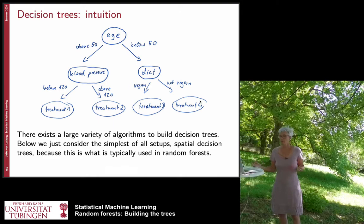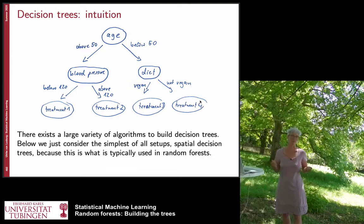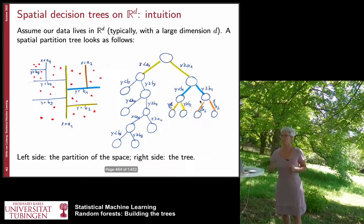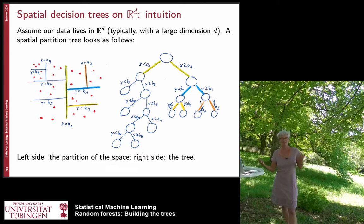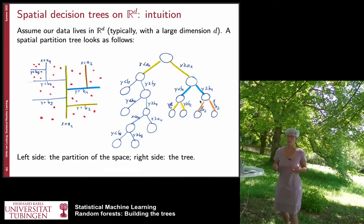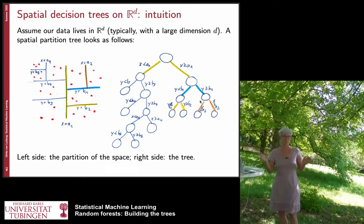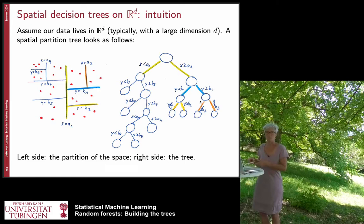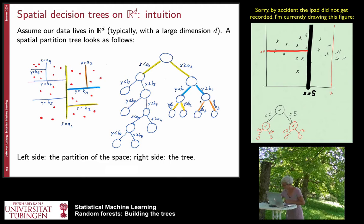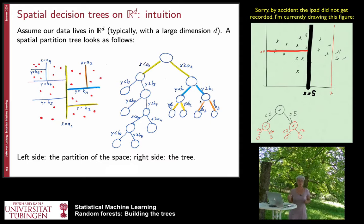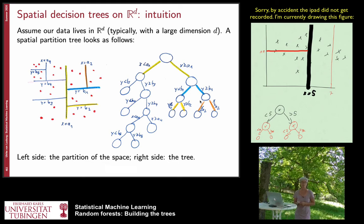There are many ways to build decision trees. In random forests we use spatial decision trees — similar to a KD tree. This tree structure splits your data space into different cells. All splits are axis-parallel — in two dimensions, you split either vertically or horizontally. You can choose, for example, to split along the dimension with the highest variance.